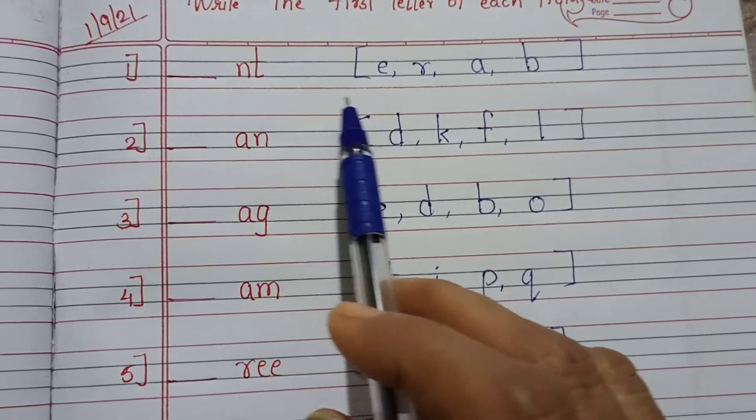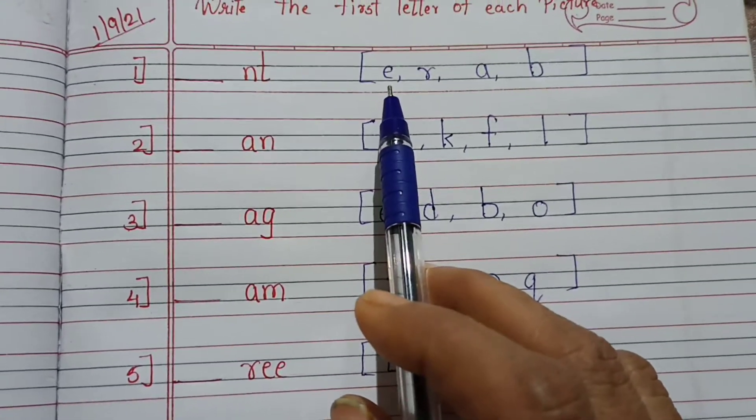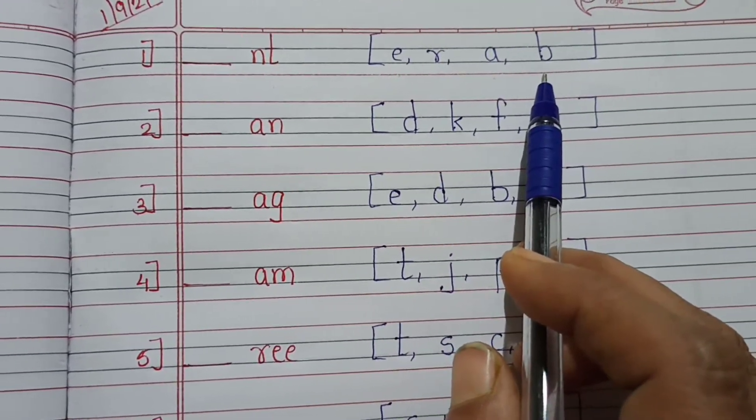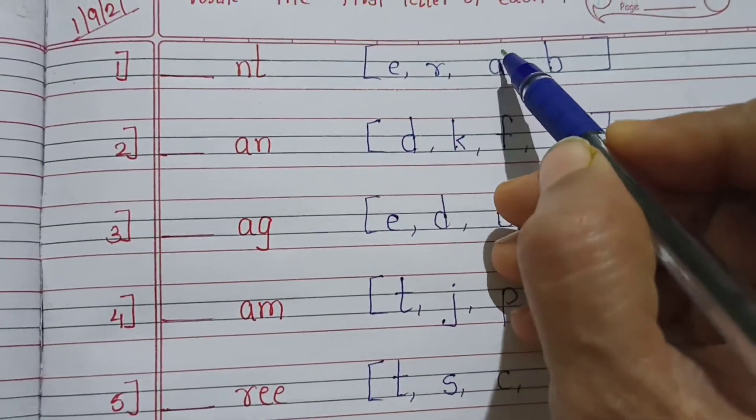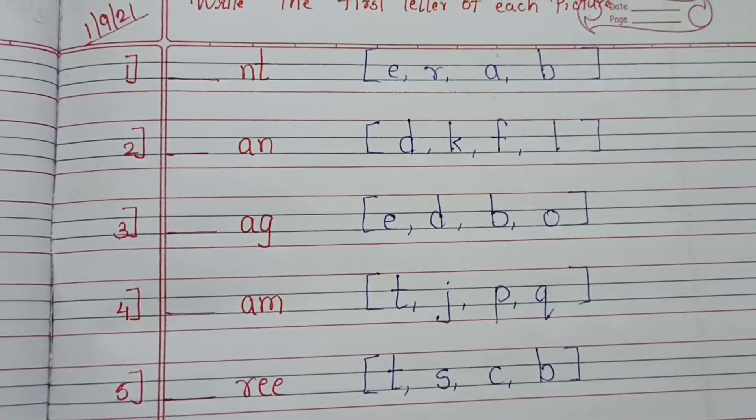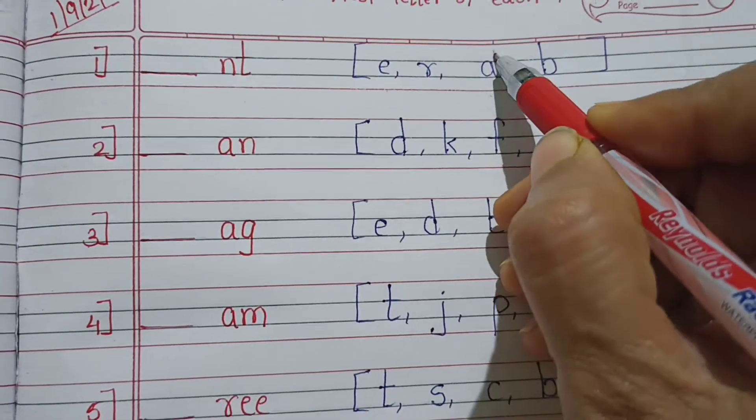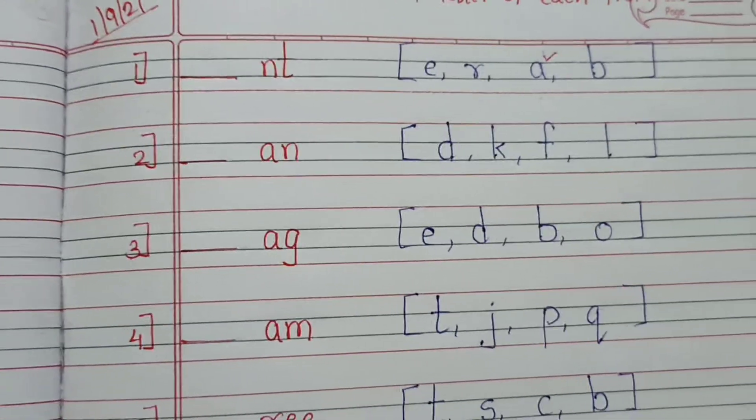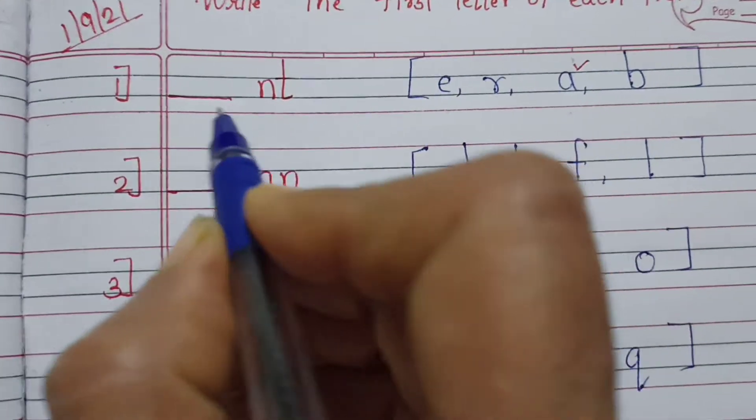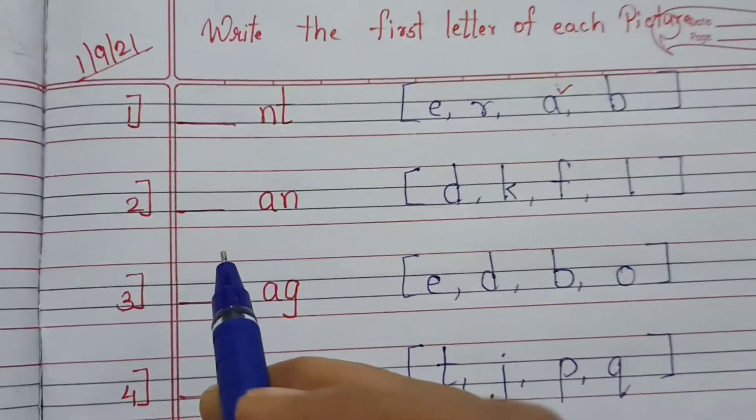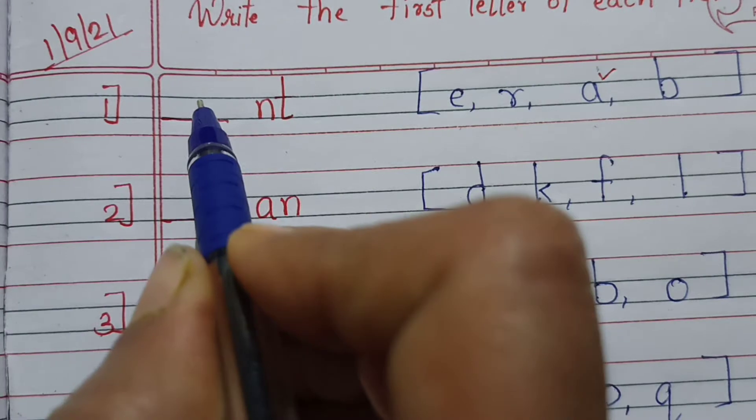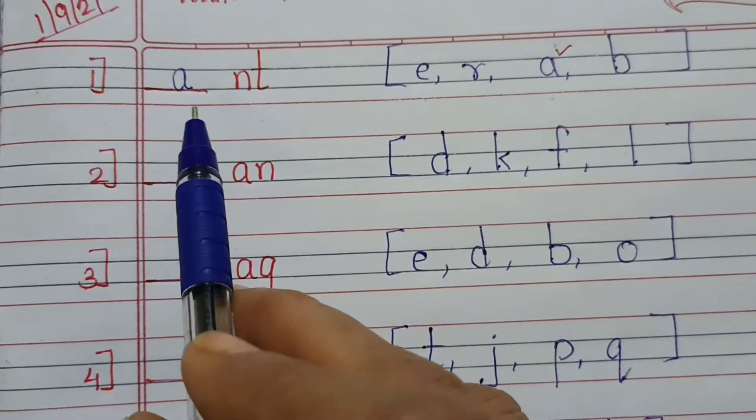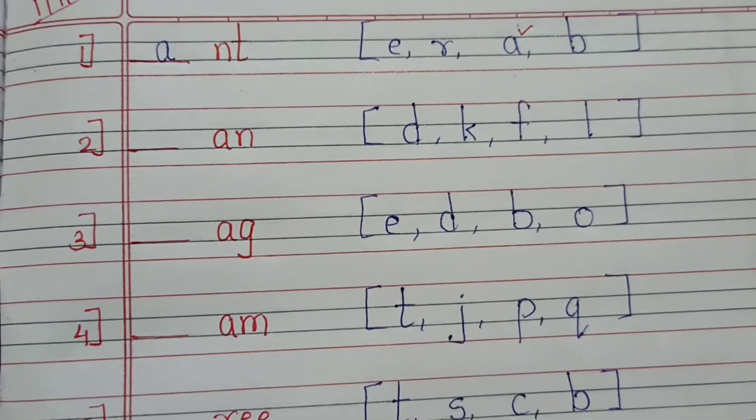Now here, dash ant. So what comes? Which option is correct? E, R, A, B. So what is correct children? A. A is the correct answer. So we are going to tick this first and then I am going to write here A with the blue pen. So spell it now: A, N, T, ant.